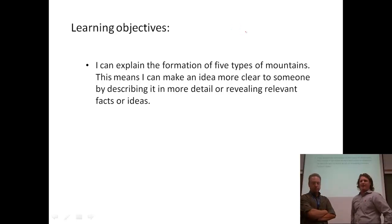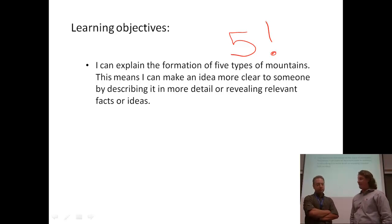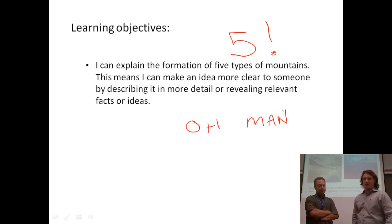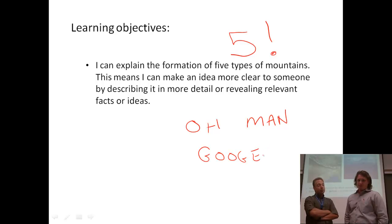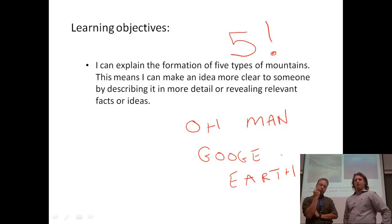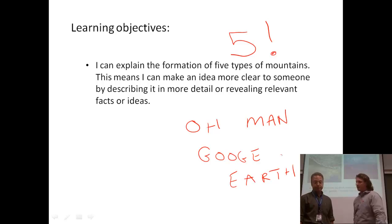A learning objective for this segment is that I can explain the formation of five types of mountains. Five types of mountains — I didn't think there were five types. They're going to have to learn some of those for the upcoming Google Earth activity. They'll need to know how to identify the different mountain types, where to look on the earth, and the characteristics of each — like convergent and divergent boundaries.